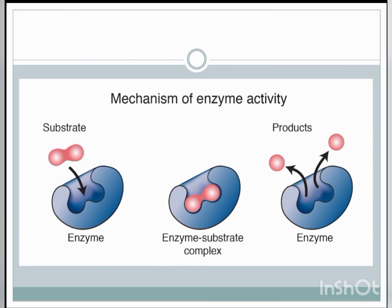When the substrate attaches to the active site of an enzyme, an enzyme-substrate complex forms. This is called a complex because two species are now attached together. After some time, the substrate separates from the enzyme to form products more quickly — and this is the main activity of an enzyme: to speed up the reaction. The area of an enzyme where a substrate attaches is known as the active site, and products form thereafter.